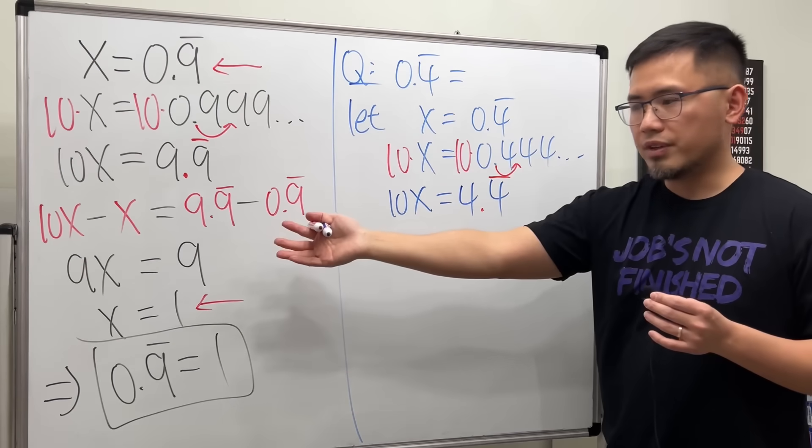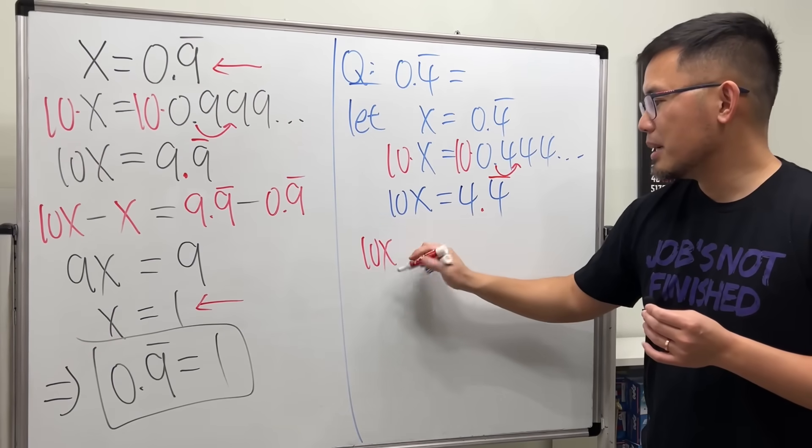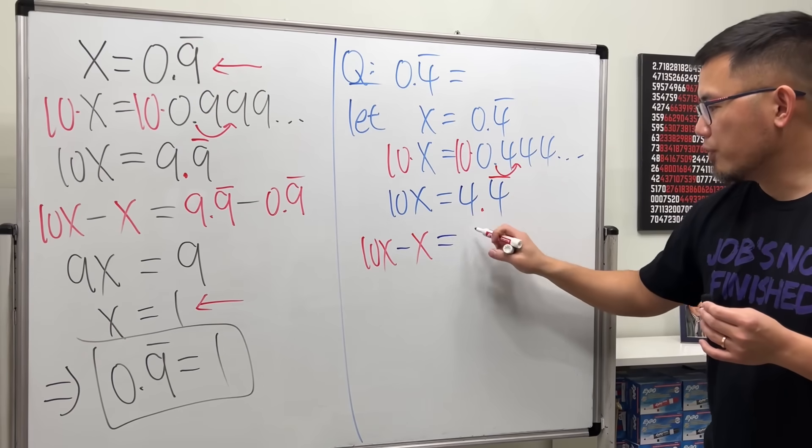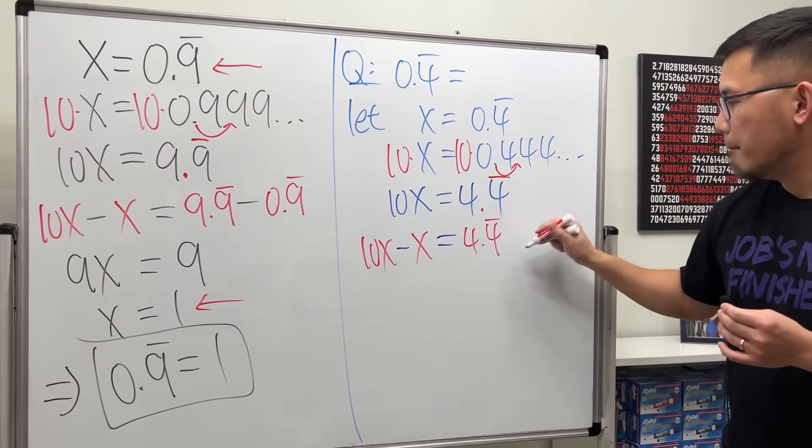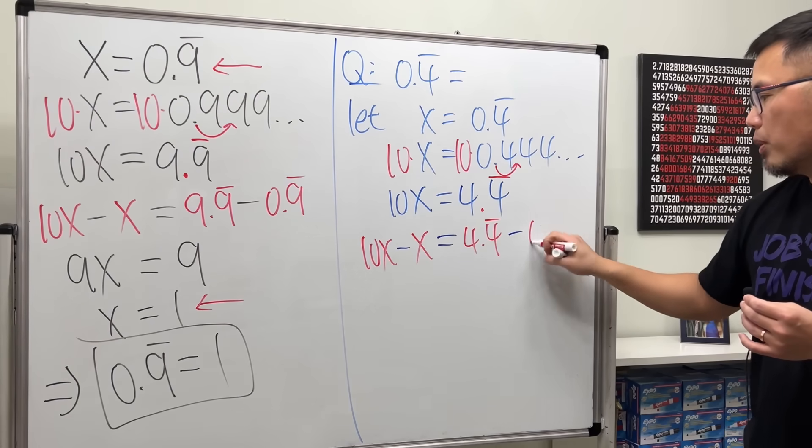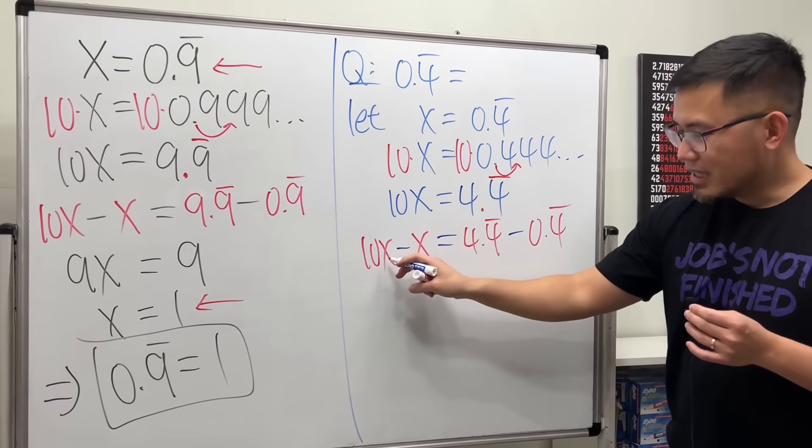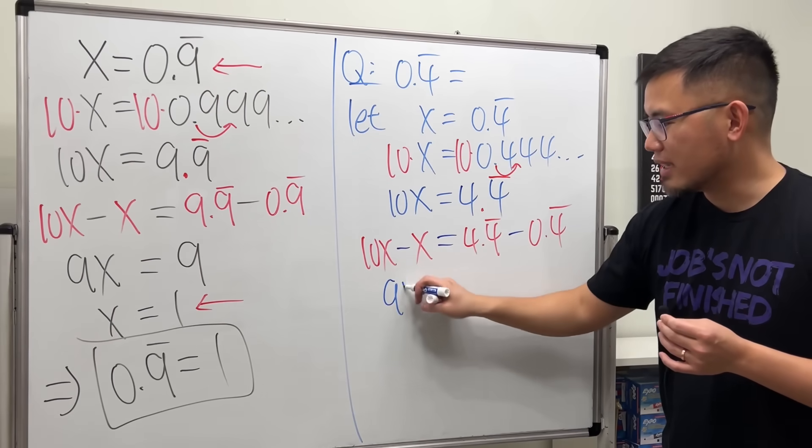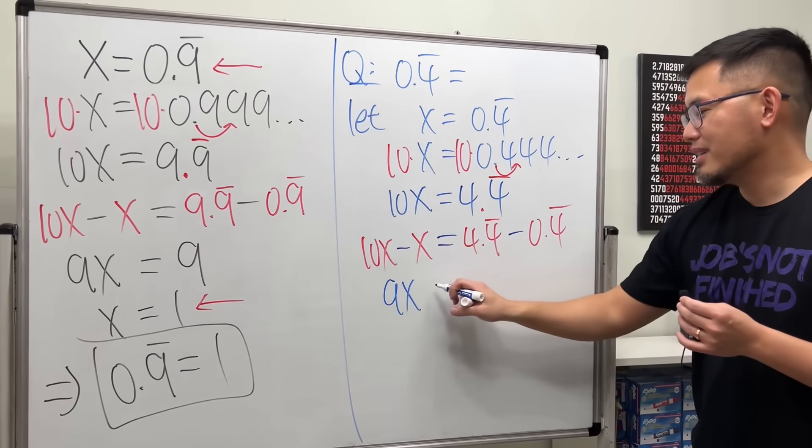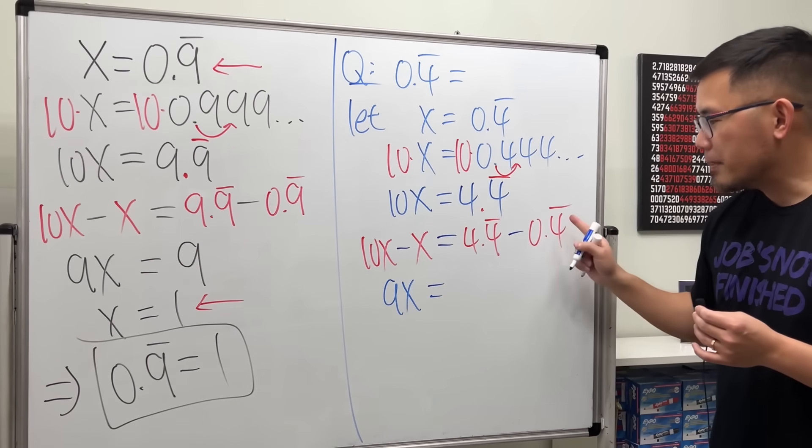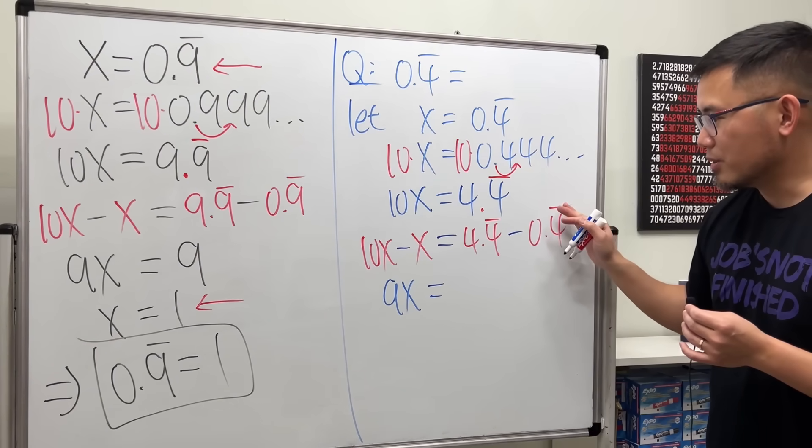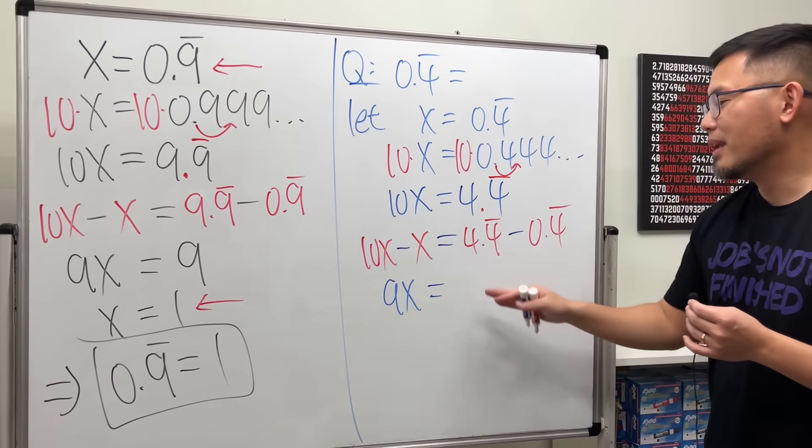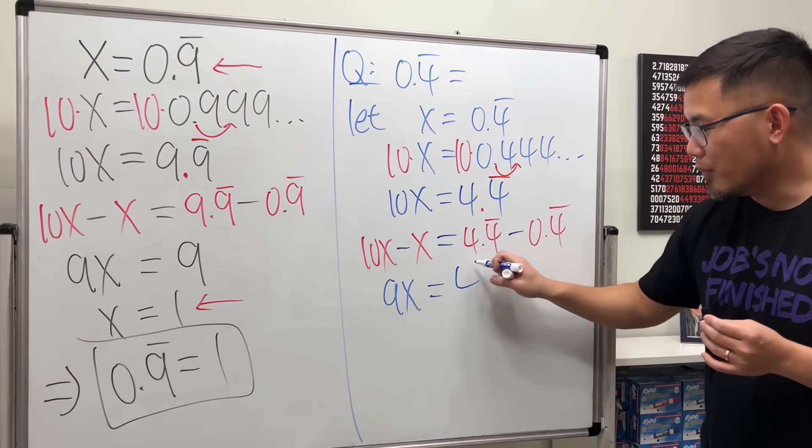10x minus x, and that's equal to 4.4 repeating minus the x, which is 0.4 repeating. On the left-hand side, again, 10x minus x, just like that, we will end up with 9x. And right here, this part and that part, they're all repeating decimal fours. This part and that part, they cancel. So we just have 4 minus 0, so we get 4.